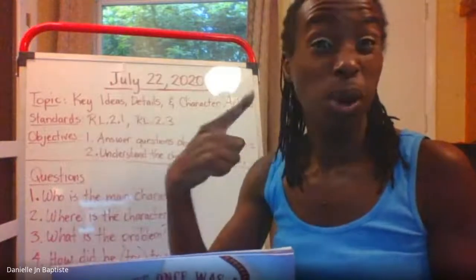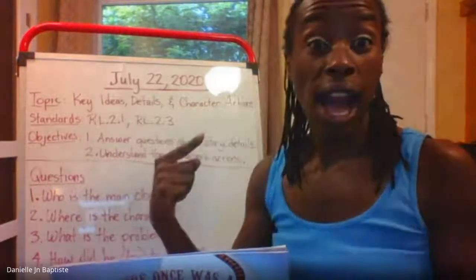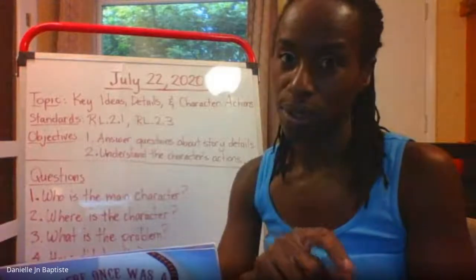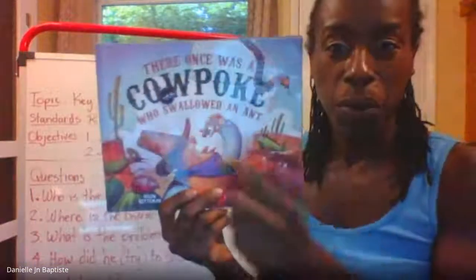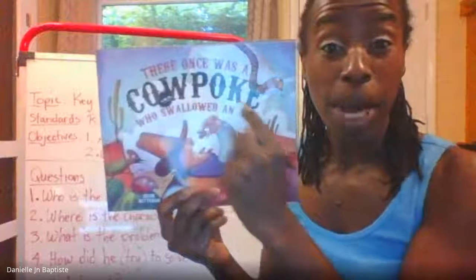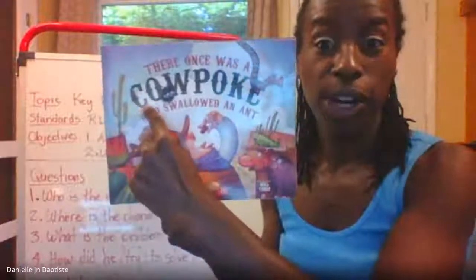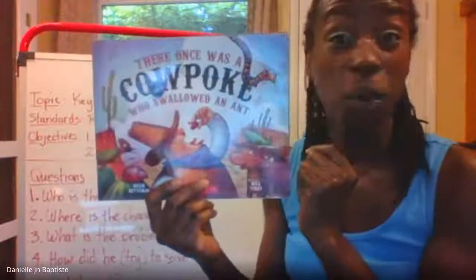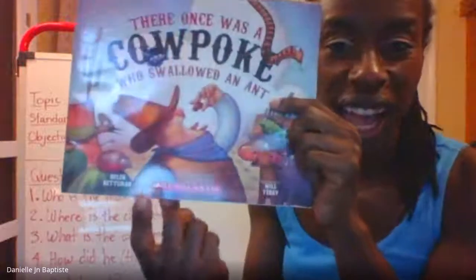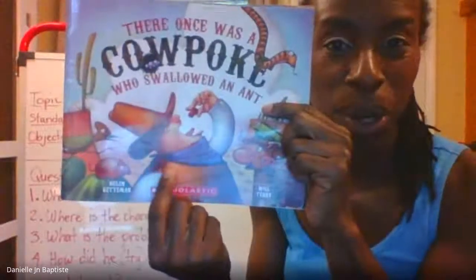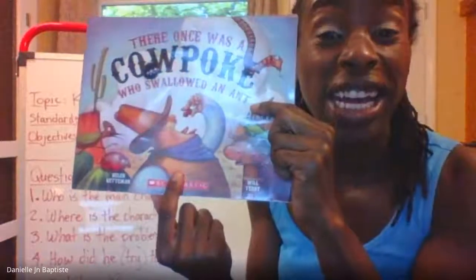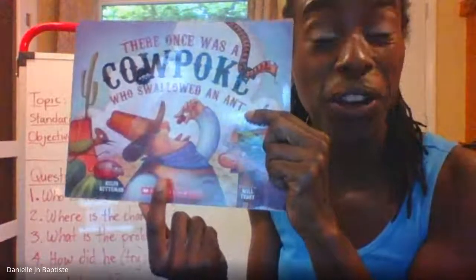I could poke myself in the cheek, I can poke myself in the arm, I could poke myself in the eye, but that probably wouldn't feel too good. So when we put the word cow and the word poke together, we get the word cowpoke. And that's a compound word — we didn't take out any letters. And this is a cowpoke — not a fat man — a cowboy. A cowpoke is another word for cowboy.